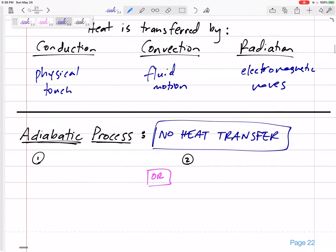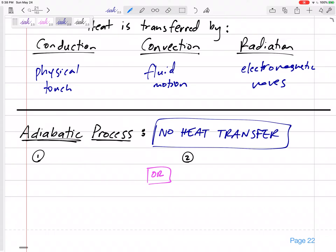Now, our definitions: if something is adiabatic, then there is no heat transfer, right? Q is zero. So if it says it's adiabatic, then Q is zero, there is no heat transfer.